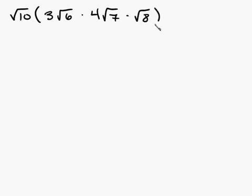Root 10 times 3 root 6 times 4 root 7 times root 8. So basically this is going to be equal to root 10, and 3 times 4 is going to be 12, and I have root 6 times root 7 times root 8. Well, let's do this. Why don't we do small parts at a time?